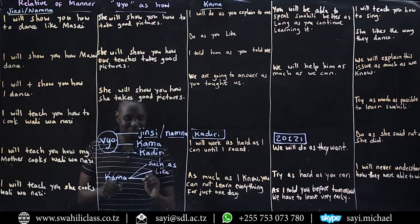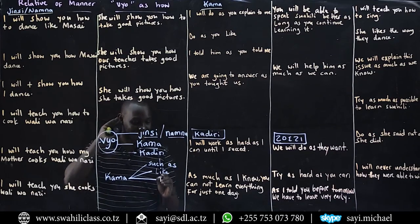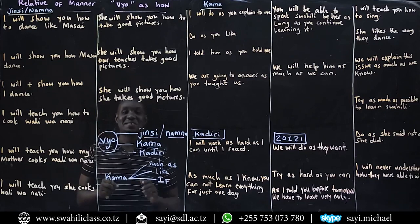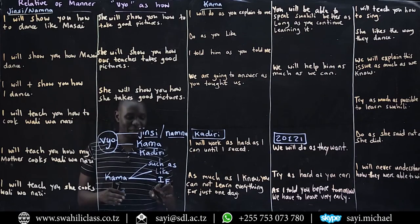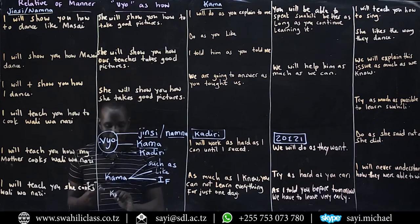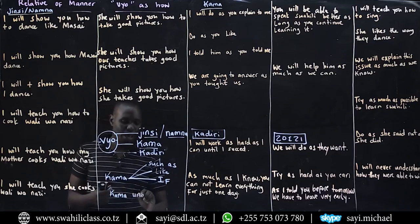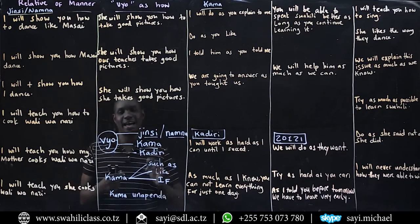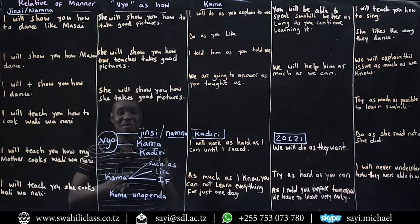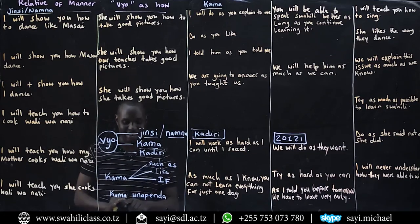But kama can also be if. Yes, kama is also if, once you have a verb in that sentence. So kama will be if once you have a verb. For example, kama unapenda unaweza kwenda — if you like, you can go. Kama unapenda: if you like.